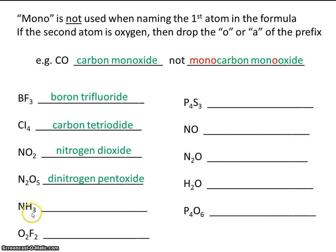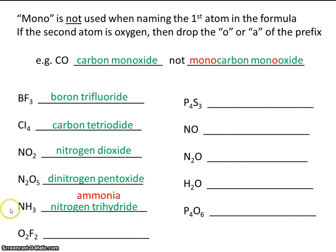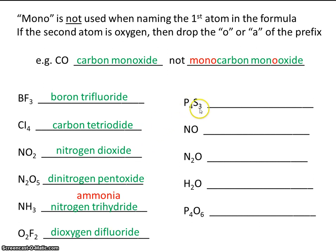This is nitrogen trihydride. The common name for nitrogen trihydride is ammonia — NH3 is called ammonia, and it's so commonly used in chemistry that you should probably just memorize it. This next one has two oxygens and two fluorines, so it's dioxygen difluoride. Here we have four phosphorous and three sulfurs, so tetraphosphorous trisulfide.